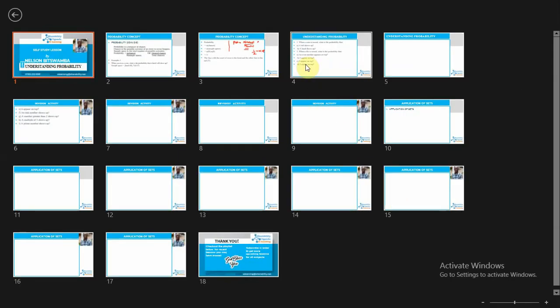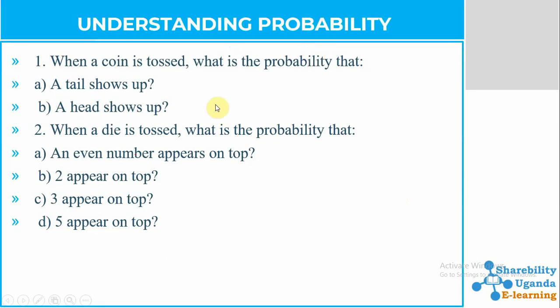Let's get started and see how we can solve out these questions. So these are the questions that we are having. Question one is saying: when a coin is tossed, what is the probability that a tail will show up, then a head will show up? This is one of our examples that we already did, so we shall directly go to question two.